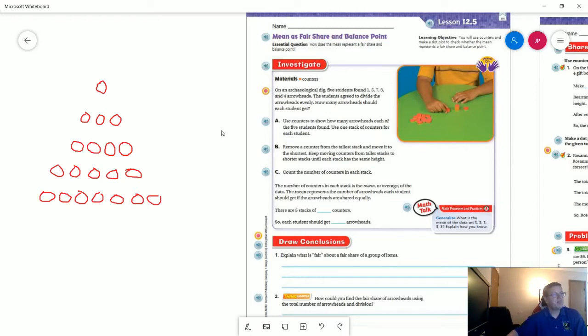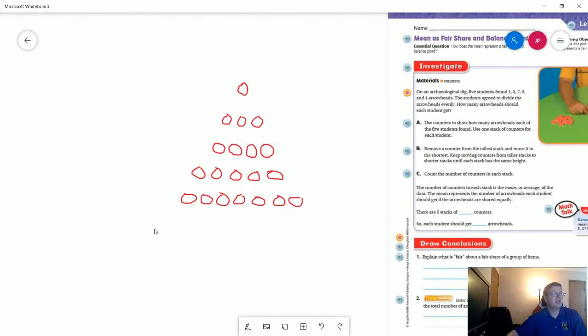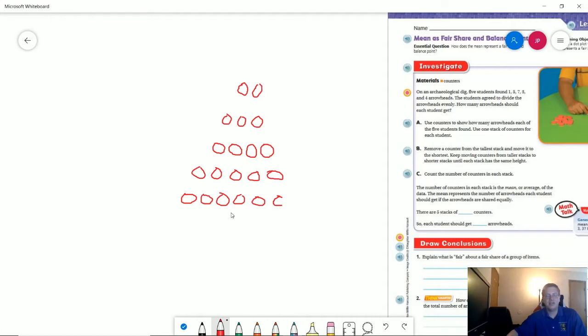If I had a situation like this where we have five different people finding a different number of objects, what they want us to do is try to figure out how many objects each person would get if everyone got the same amount, if we made equal groups. I'm going to take one away from here and put it up here. I could do that again.